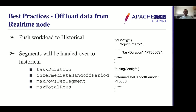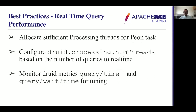You need to ensure that segments are properly sized before pushing to deep storage. It's good practice to configure intermediate handoff period or max total rows. Once this limit is reached, the entire segment will be pushed to historical. A common best practice is to set Druid processing num threads to 2 — one thread handles ingestion and another handles queries. There is no CPU isolation, but this reduces CPU thrashing. If queries are more real-time in nature, you can increase Druid processing num threads to a higher value. Monitor Druid metrics for query time and query wait time to decide whether to increase or decrease the thread count.